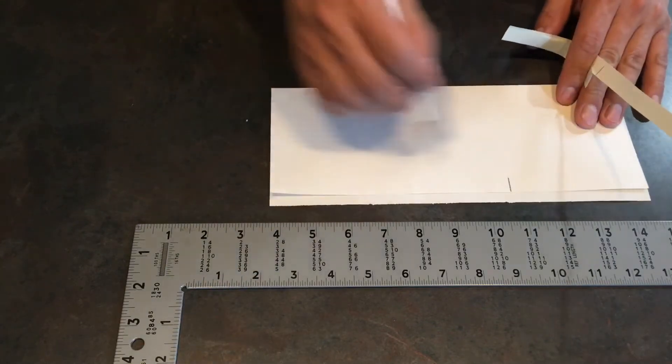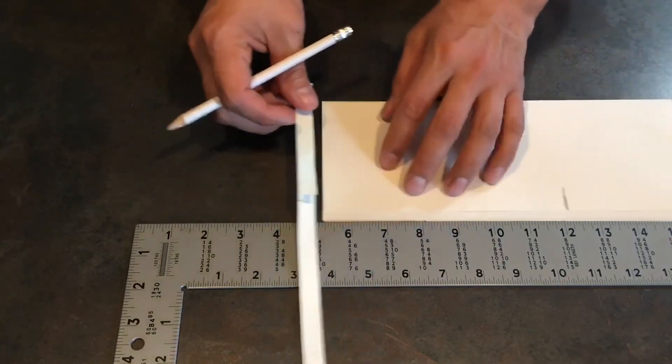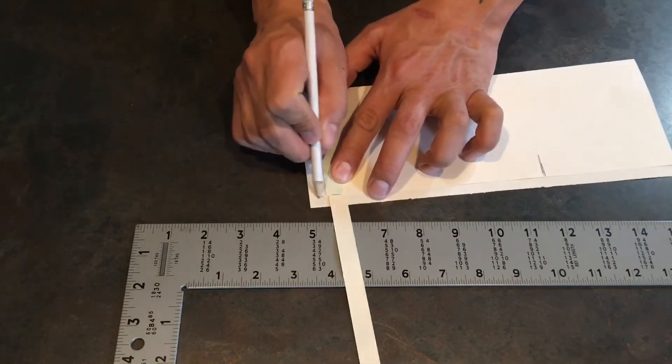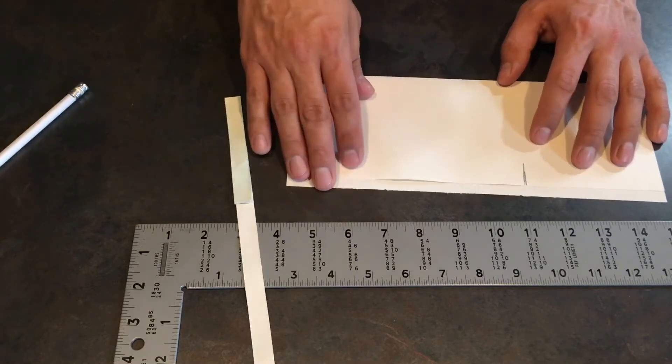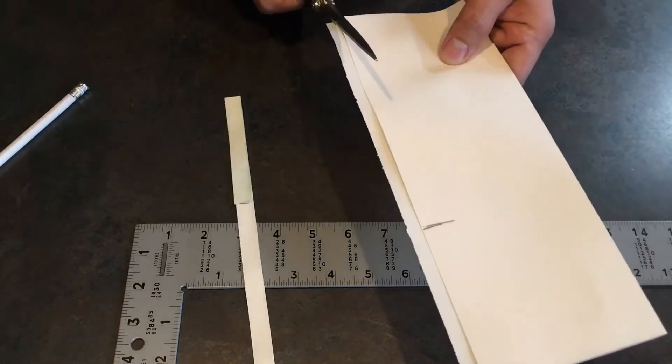So this is your heel to toe measurement, and when you fold that in half, that is your measurement for around. What you're going to do is cut off the excess and trim.